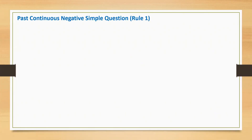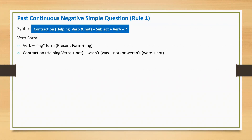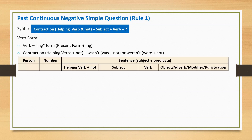Past continuous negative simple question. It is an interrogative negative statement and it starts with a contraction. Let's understand the rule or syntax. First, contraction, followed by subject, main verb, and question mark at the end. Main verb is in the -ing form. Contraction 'wasn't' is applicable for singular and 'weren't' is applicable for plural.